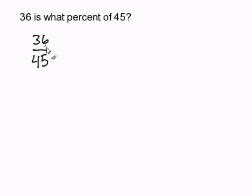Then, I'm going to convert 36 over 45 into a decimal. So I'm going to divide. 45 divides into 36. Obviously, 45 cannot go into 36. Therefore, I'm going to add a decimal and a zero.